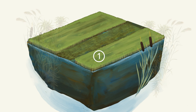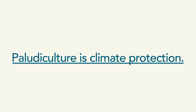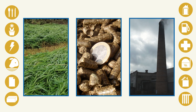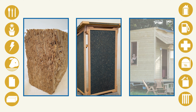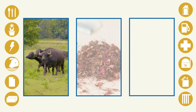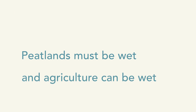Paludiculture follows three principles: farming on wet, including re-wetted, peatland soils; working with site-adapted species; and soil-conserving harvesting of above-ground biomass. Paludiculture is climate protection — it enables the production of renewable biomasses for climate-neutral products and value chains. These products can replace conventional products based on fossil raw materials. So-called climate-negative products can even be produced if they confine carbon permanently and replace products manufactured from fossil resources. Examples are durable fibre and construction materials. Paludiculture can also provide renewable biomasses for climate-friendly energy production, animal feed, food, medicine, and raw materials for horticultural substrates. Peatlands must be wet, and agriculture can be wet.